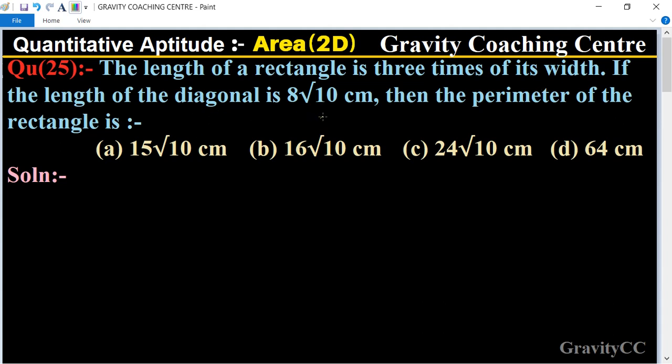the length of the diagonal is 8√10 cm. Since the length of the rectangle is 3 times of its width, first we let the width be x, so the length is 3x and the diagonal is also given as 8√10 cm.